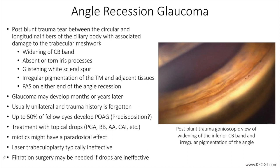Baseline examination of the optic nerve and retina should also be completed, including visual field testing and optic nerve head optical coherence tomography, which can then be compared to future testing as surveillance continues for development of glaucoma. The differential diagnosis of angle recession glaucoma centers on appropriate history and identification of a history of blunt trauma.